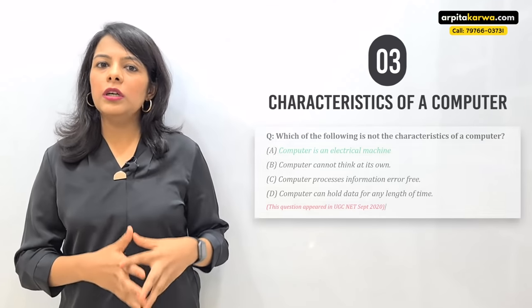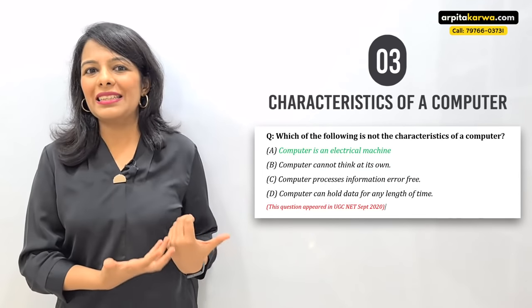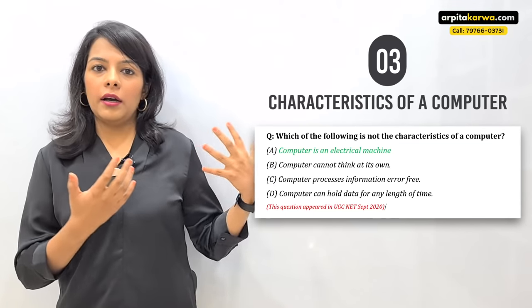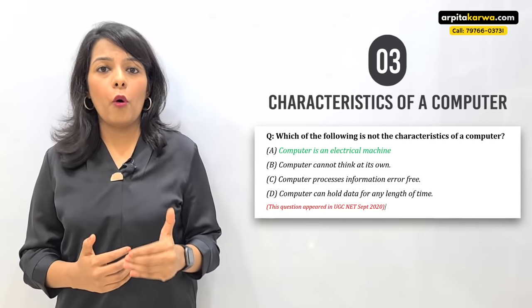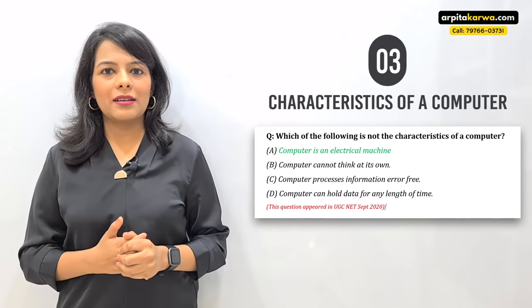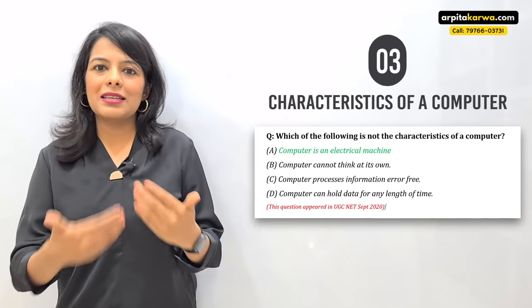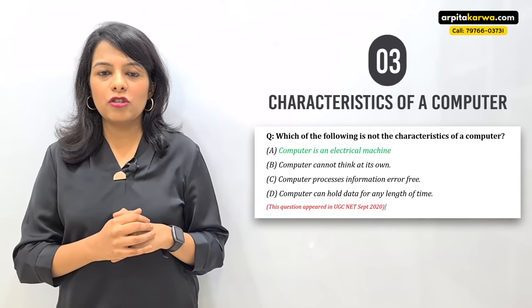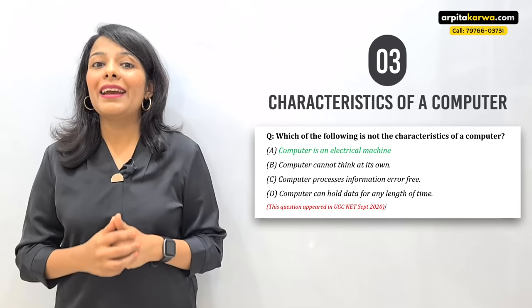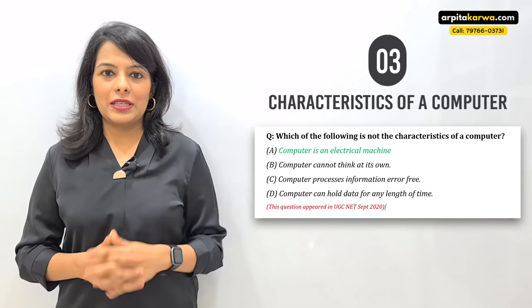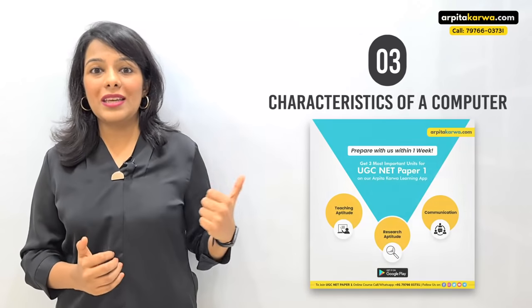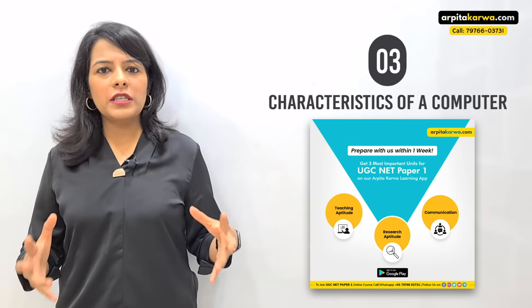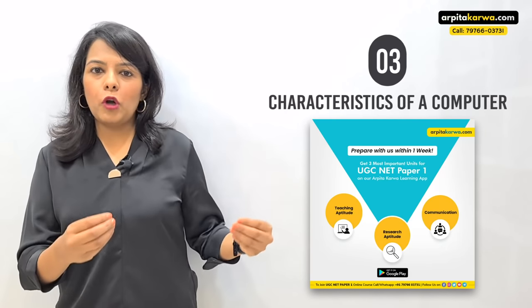Even though a computer seems like a very intelligent and fast device, it can never fully replace a human being. If you look at a characteristics-based exam question, you have to be very sure, because all four options might seem like valid characteristics. For example, 'electronic device' is not listed as a characteristic — it is a definition component — so option A would be wrong. You need to be very clear on the characteristics to get these questions right.